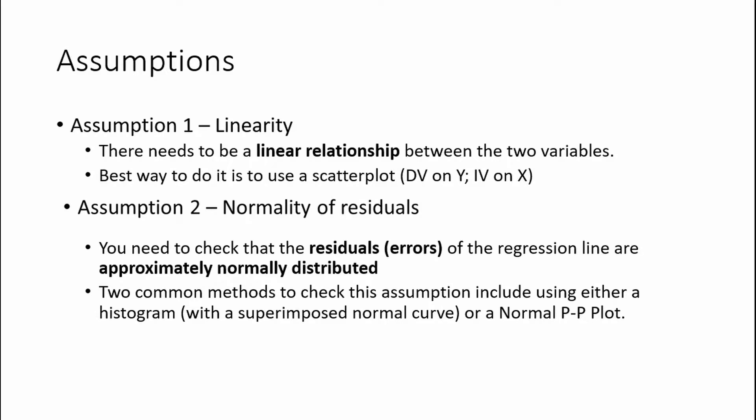The second assumption has to do with residuals. You need to check that the residuals — also known as the error of the regression line — are approximately normally distributed. The preferred way of checking this is to use a normal PP plot, which will be discussed during an example.